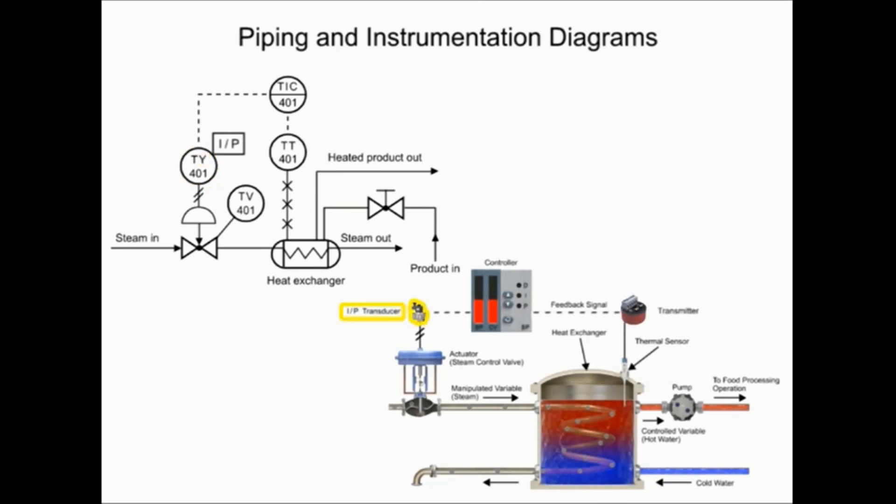The transducer converts an electronic signal to a pressure signal and is indicated by the square containing the letters I and P. The line with diagonal marks designates a pneumatic connection.